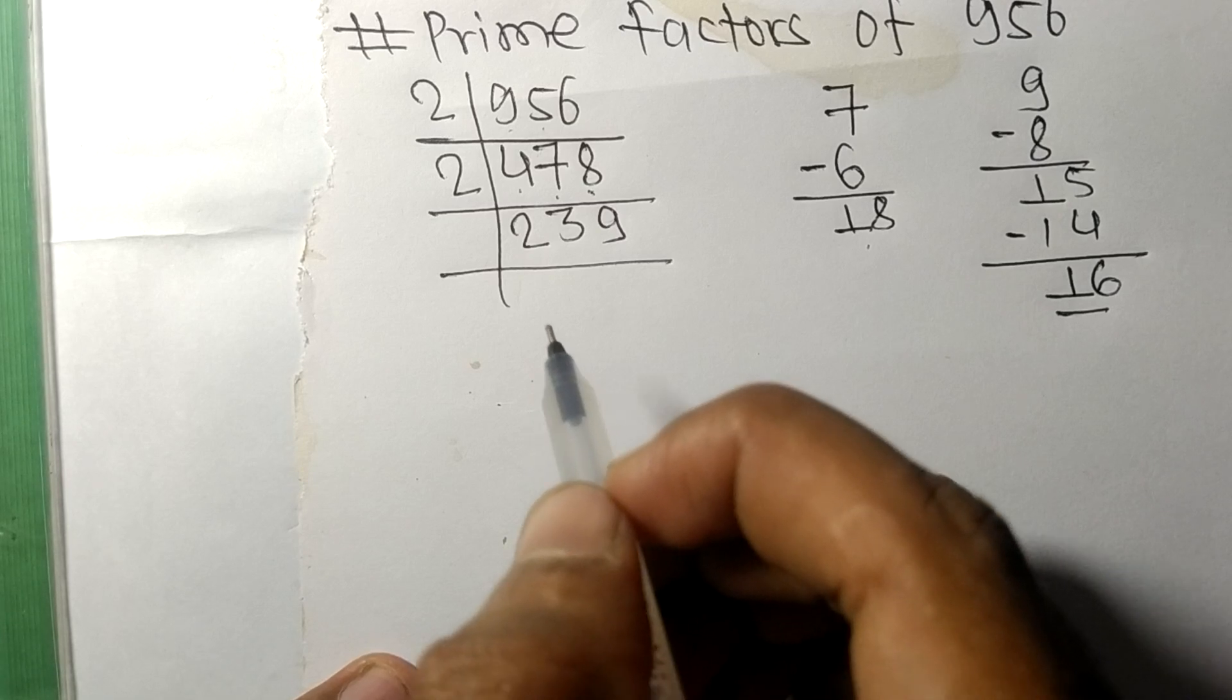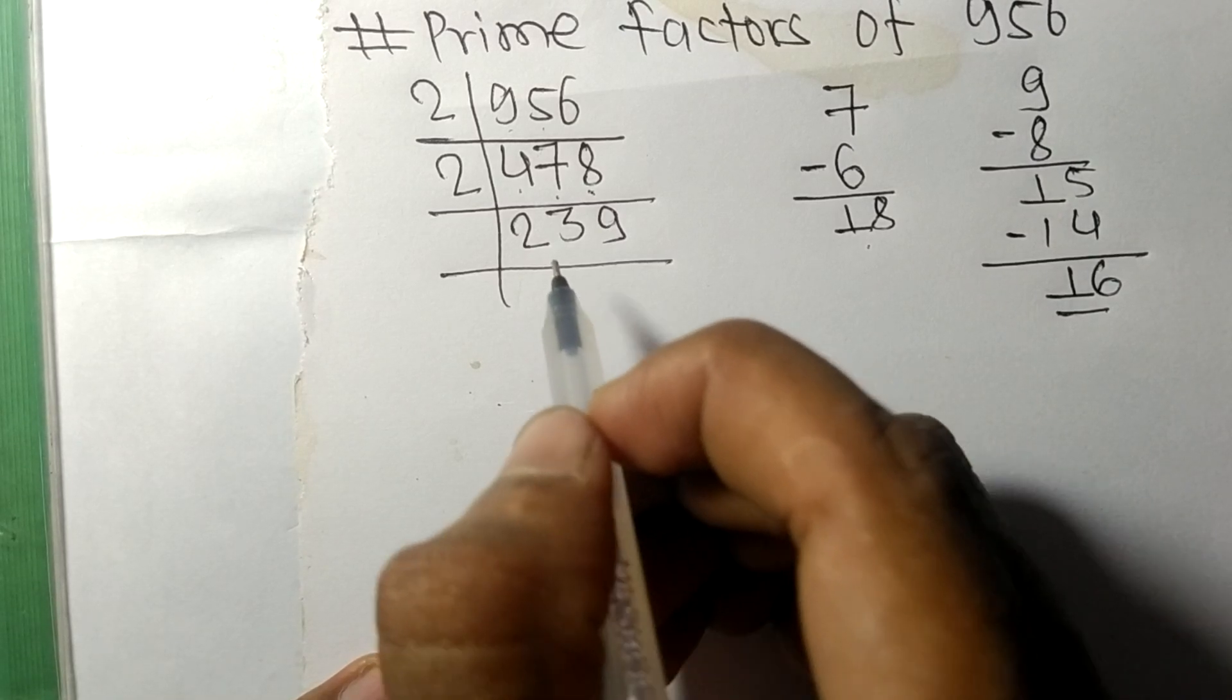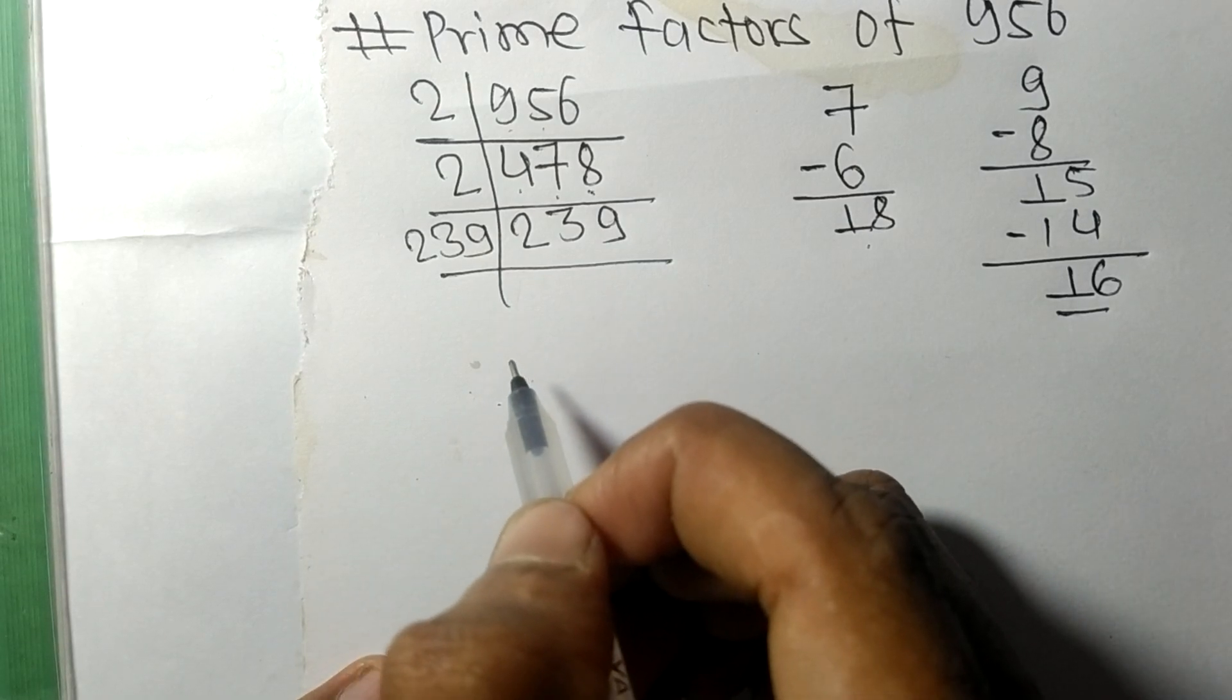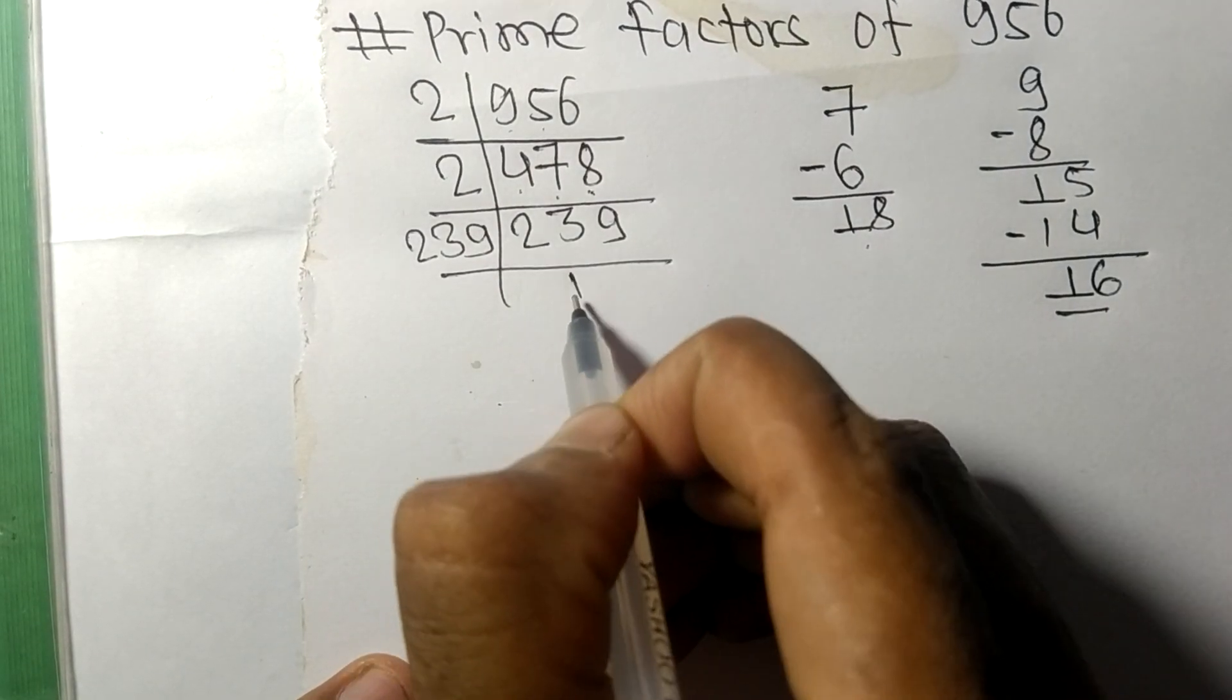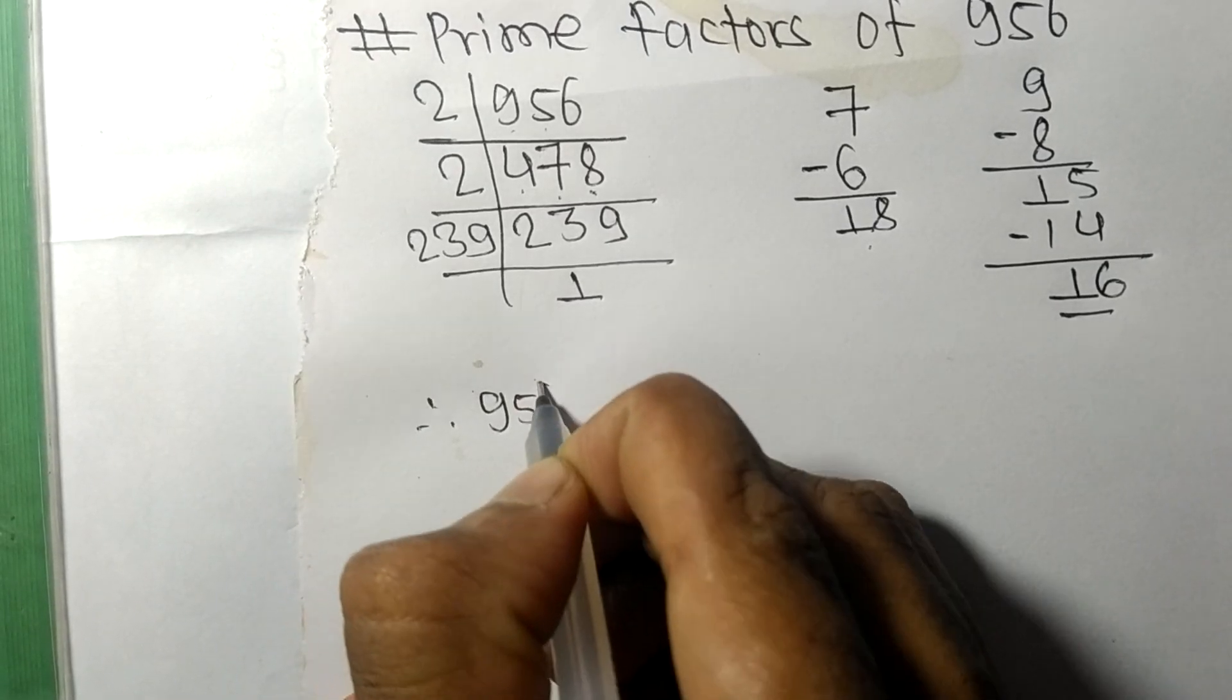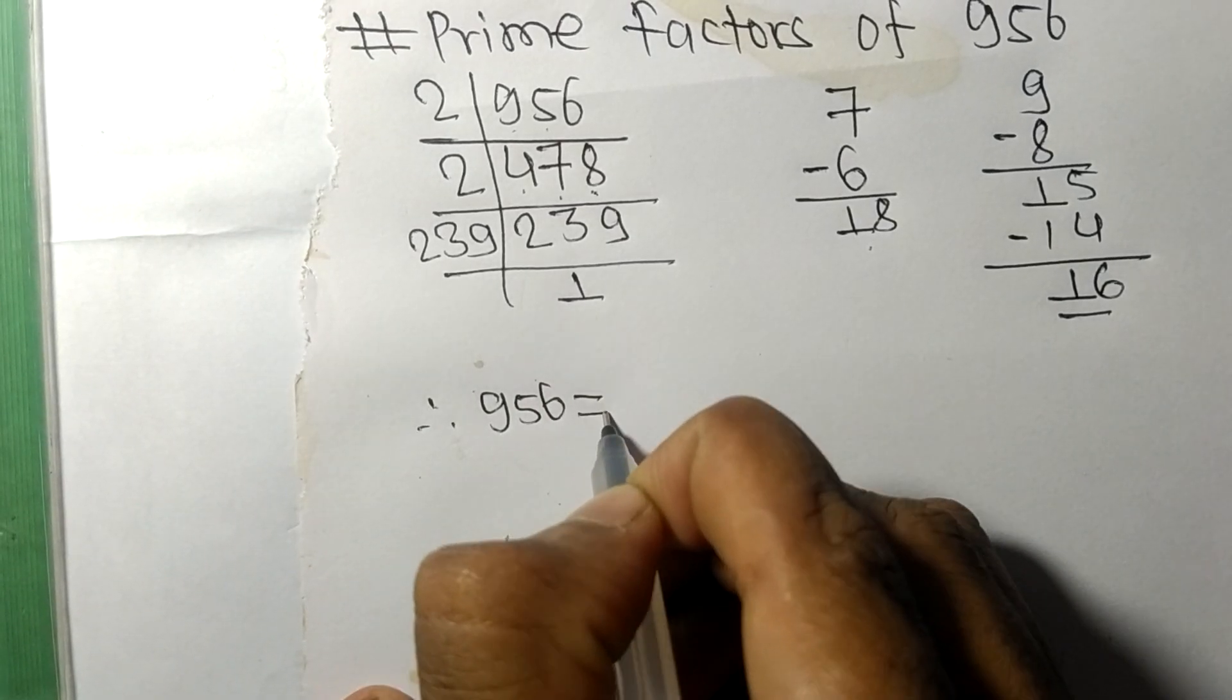239 is a prime number, so it is exactly divisible by 239 only. On dividing we get 1.